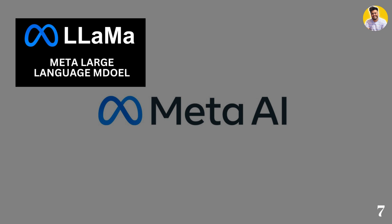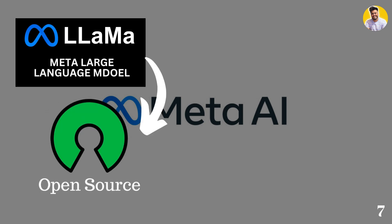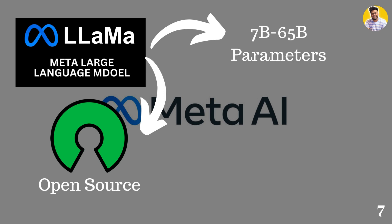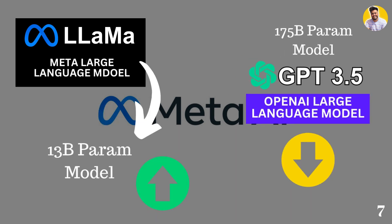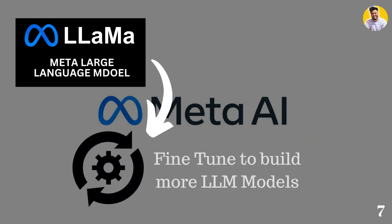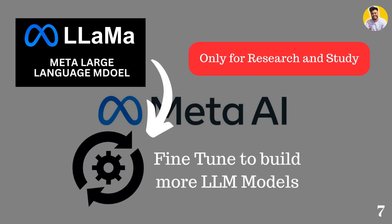Our next large language model is LLaMA. Meta has gone fully open source, releasing LLaMA, trained on 7 billion to 65 billion parameters depending on the model size. According to Meta, the LLaMA 13 billion model outperforms GPT-3, which is trained on 175 billion parameters. Many developers are using LLaMA to fine-tune and create other open-source models. However, LLaMA is released for research purposes only — unlike Falcon, it cannot be used in your own projects, companies, or products.